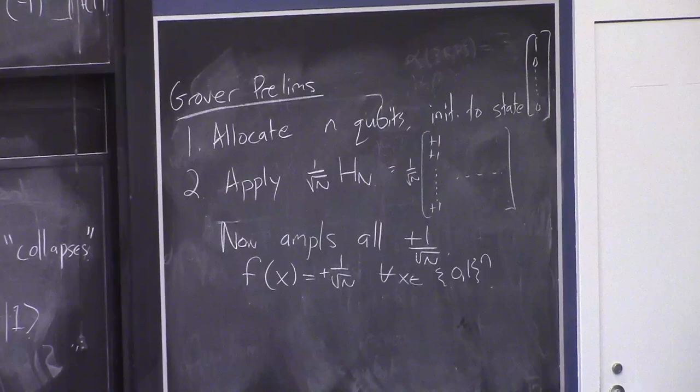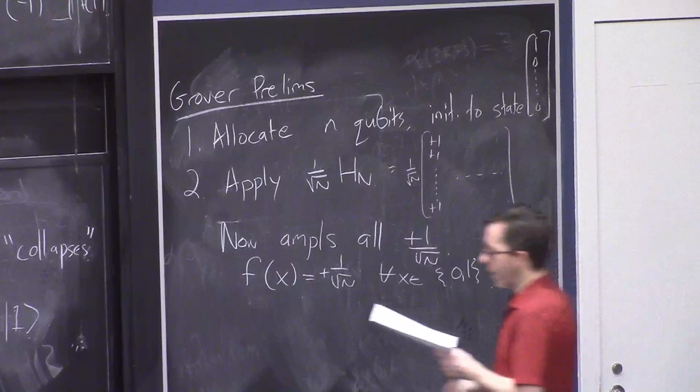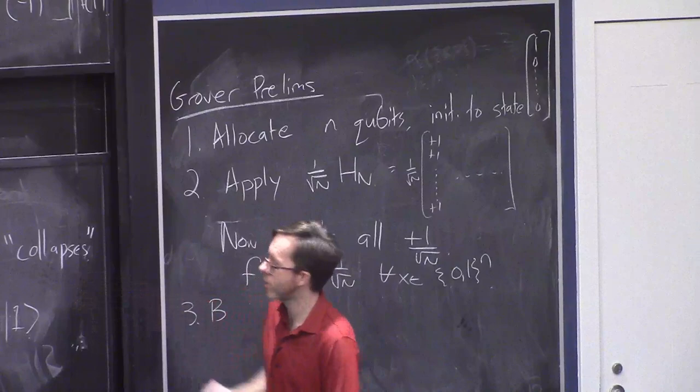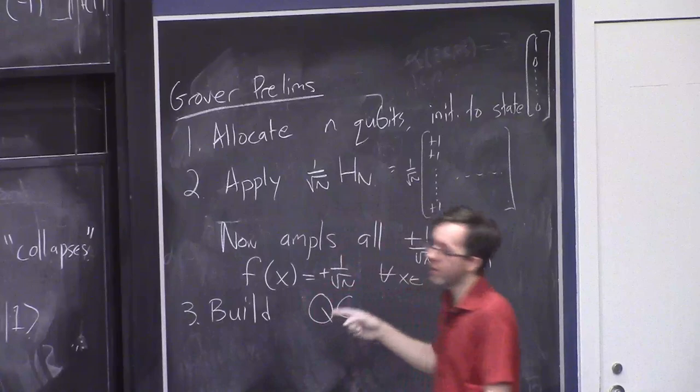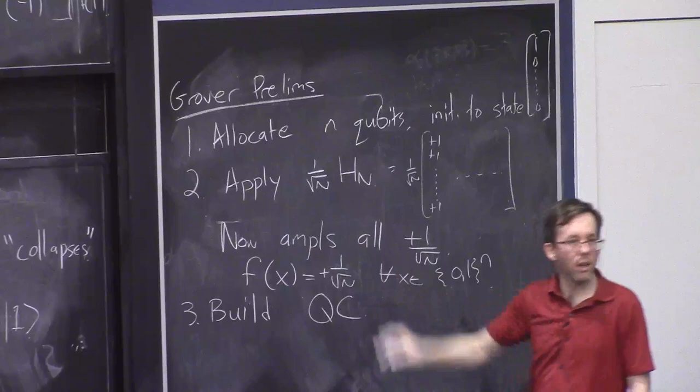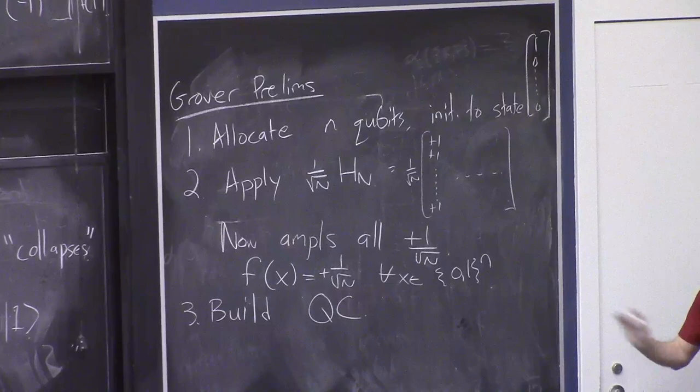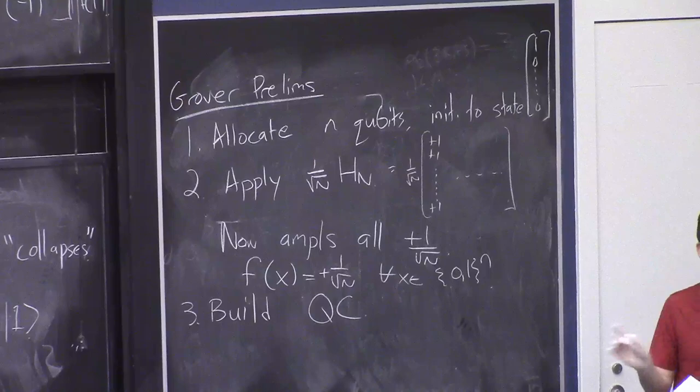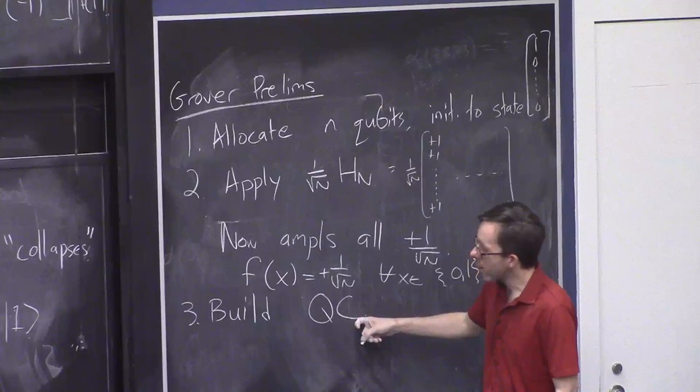So you can think of the state as represented by the function f of x equals plus 1 over root N for all x — an equal superposition of all 2 to the little n positions in the vector. The last preliminary thing is to build the quantumification of the input circuit C. Take circuit C and build the quantum version of it. This takes poly n time and produces a poly n size quantum circuit, so this part is efficient. We're shooting for an algorithm that runs in time 1.4 to the n, so poly n is perfectly fine.